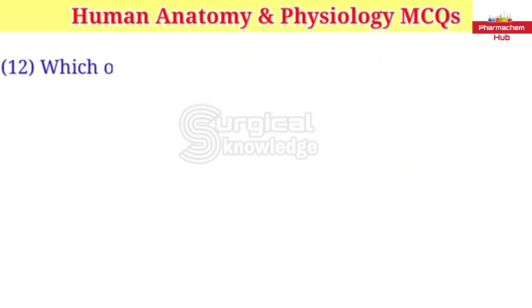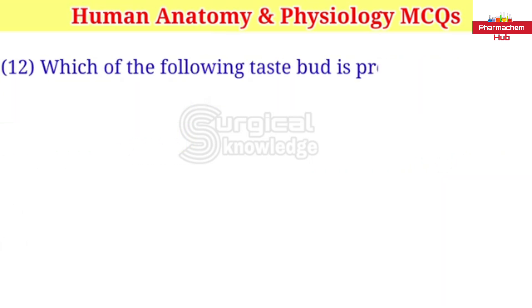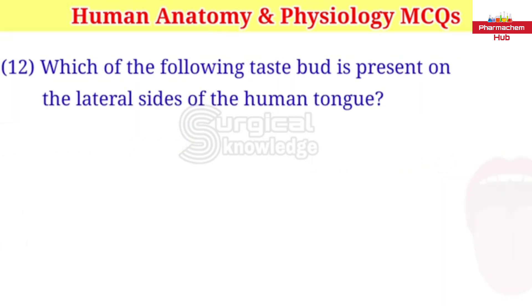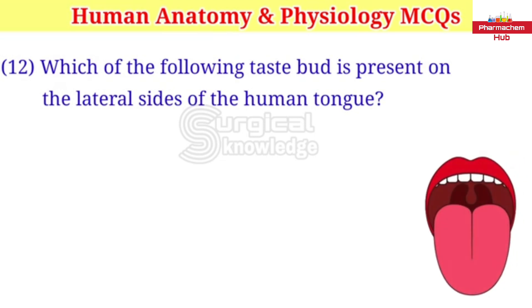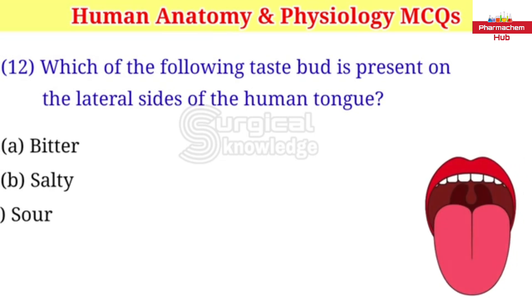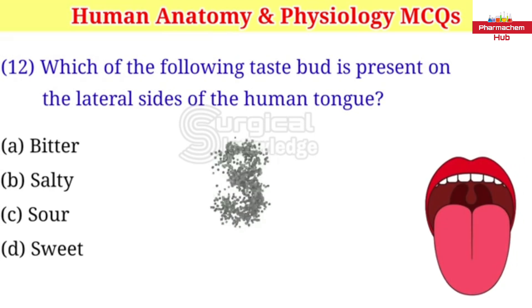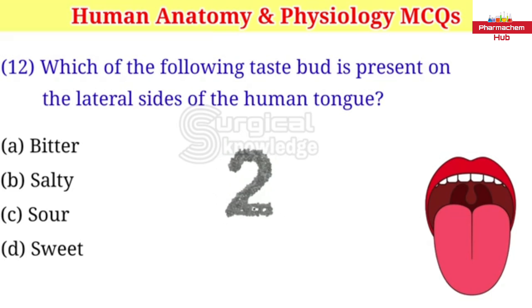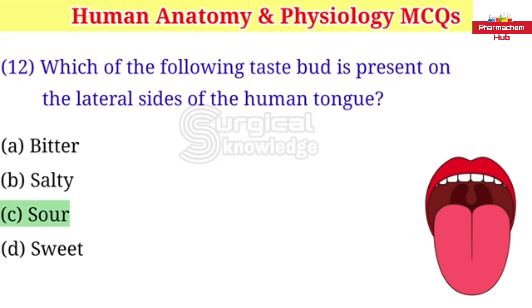Which of the following taste buds is present on the lateral sides of the human tongue? A. Bitter B. Salty C. Sour D. Sweet. Right answer is sour.